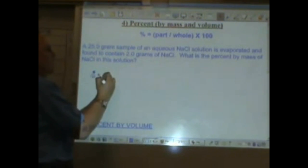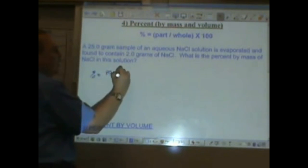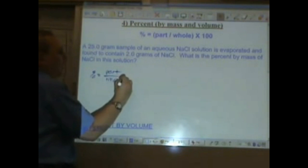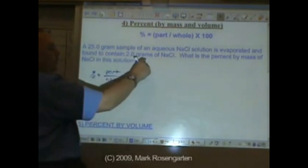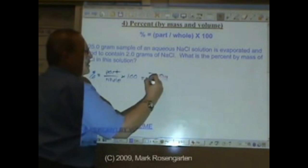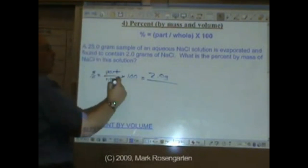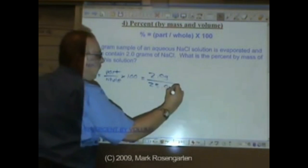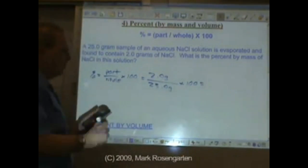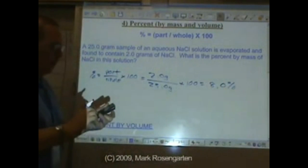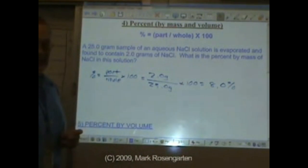Percent equals the part over whole times 100. The part was the salt, 2.0 grams. The whole was the solution, 25 grams, times 100 because it's percent. Two sig figs, 8.0% by mass.